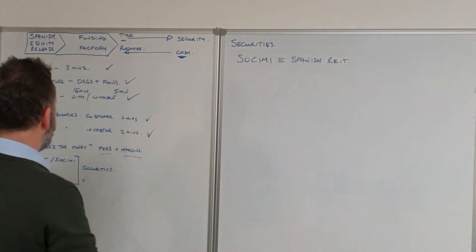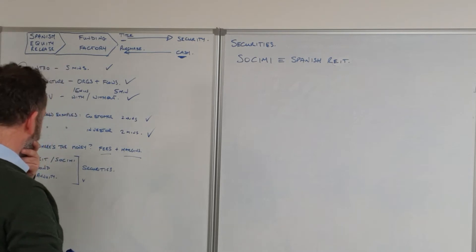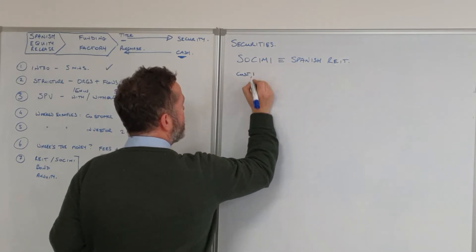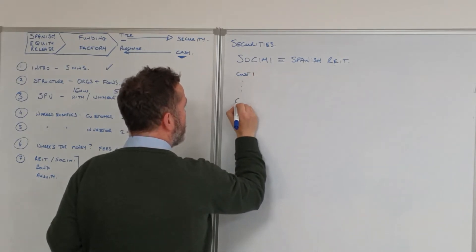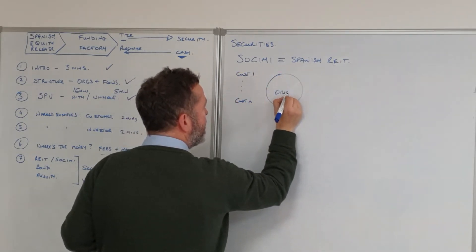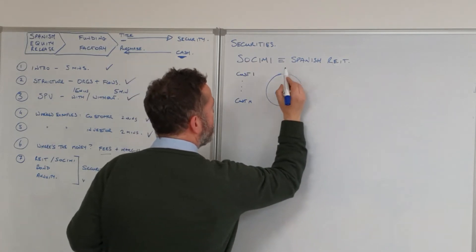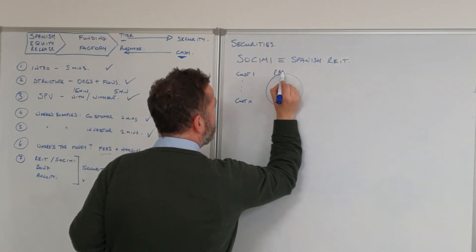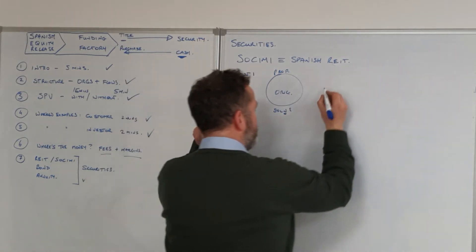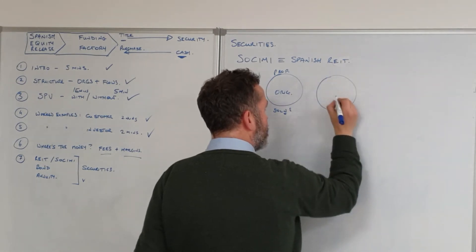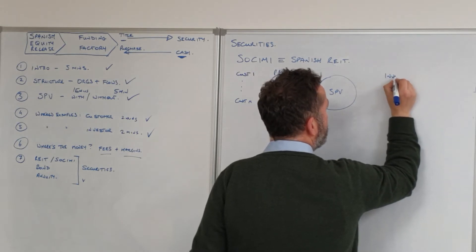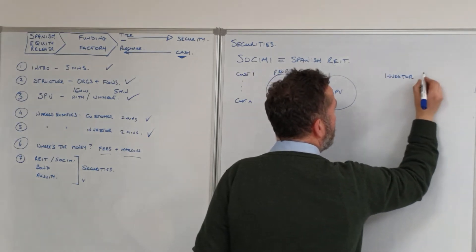Let me draw up a few things. We've got our customer base — customer number one through customer N — and we've got our originator, which is Spanish Property Solutions. We've also got our SPV, and we've then got our investor community.